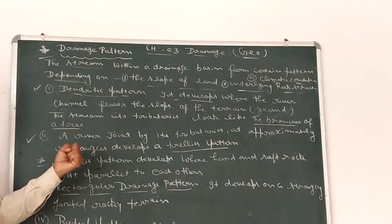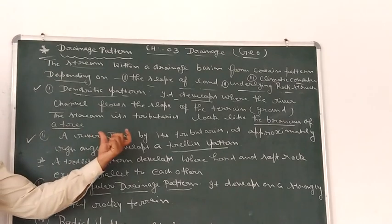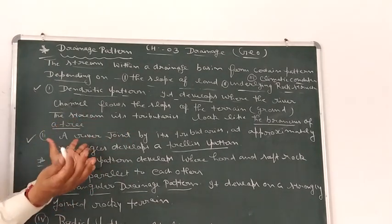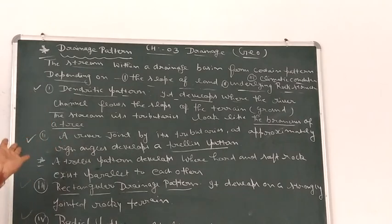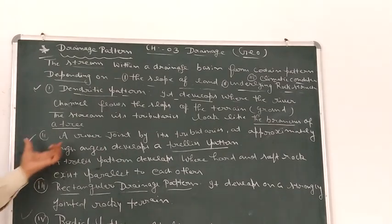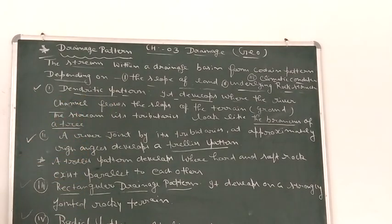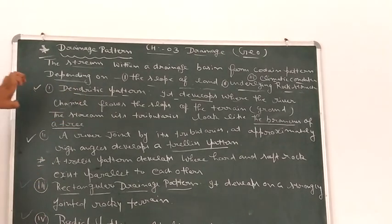In this pattern, the streams and tributaries look like branches of a tree. They spread out like tree branches. This is why it is called dendritic pattern. The name comes from its resemblance to tree branches.